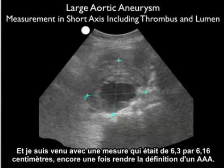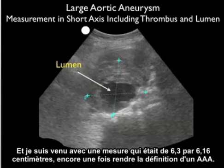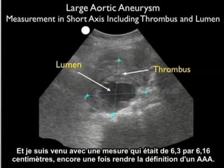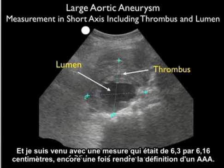Next, we're going to measure this triple A, putting the calipers from anterior, posterior, and laterally, trying to add the lumen and the thrombus to our measurements. I came up with a measurement of 6.3 by 6.16 centimeters, again making the definition of a triple A.